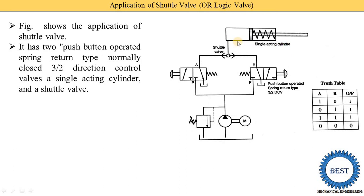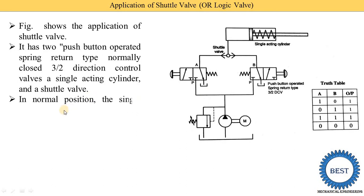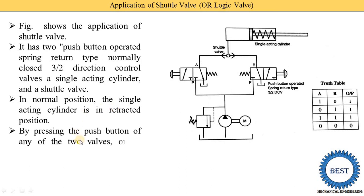When the valve is closed, retraction is occurring in the single-acting cylinder. The oil coming from the cylinder is supplied to port A and port B. Port B is connected to the T port, and the T port is connected to the reservoir. Similarly, port A is connected to the T port, which is also connected to the reservoir.